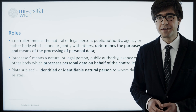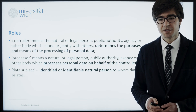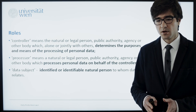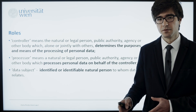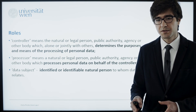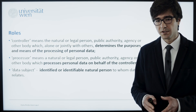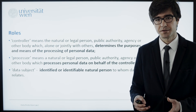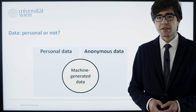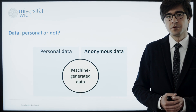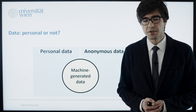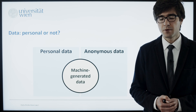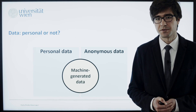Identified means that when you look at the personal data, you automatically know which person it relates to. If it's identifiable, it means that at that particular moment you cannot directly relate this data to a person, but it would be possible, for example, in a different context. The central question we need to answer before going into the GDPR in more detail is: what is personal data, and how is it different from anonymous or non-personal data?